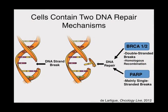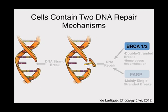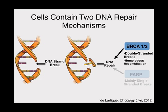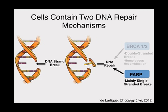Two vital pathways for DNA repair involve the breast cancer 1 and 2 genes, known as BRCA1 and BRCA2, and poly-ADP ribose polymerase, known as PARP. Mutations in BRCA1-2 are well known for their association with increased risk of breast cancer. In the context of DNA repair, BRCA1-2 recognizes and repairs double-stranded breaks via homologous recombination. PARP is a related enzymatic pathway that repairs single-stranded breaks in DNA.